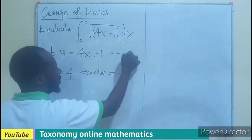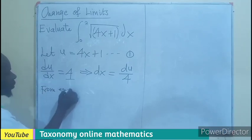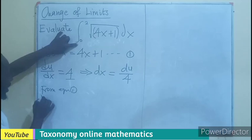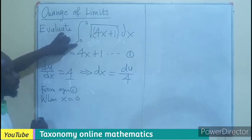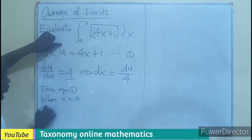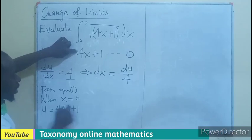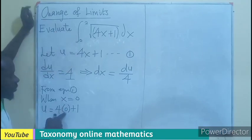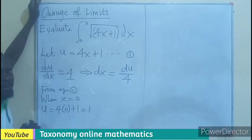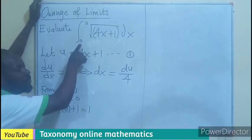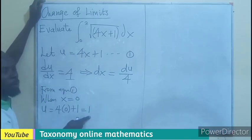So, let's label this as equation 1. So, from our equation 1, when we can take the first limit, the lower limit, when X is equal to 0, from here, let's see. It will be U equals to 4 times 0 plus 1. X is 0. So, X will now be 0. And that simply means that this will be 0, then you have 1. Meaning, change of the limit, the lower limit for X is 0. The lower limit for U will be 1.